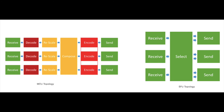In MCU, the most time-consuming activity is the encoding and decoding of the video, and this happens on the MCU server side. But in SFU, those encoding and decoding activities are at the client endpoint. The server will only act as a forwarder, and the computing power required is very low. Hence, the cost of setting up the server is very less in SFU, and the deployment complexity is also much lower in SFU compared to MCU.